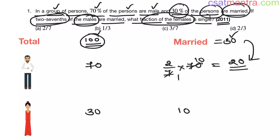Now, what fraction of the females is single? We have 30 females. Out of them, 10 are married. Remaining 20 will be single. Now, this 20 is what fraction of 30? So, 20 by 30, this is equal to 2 by 3.